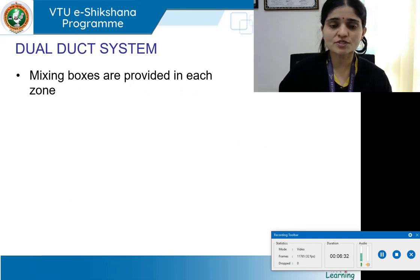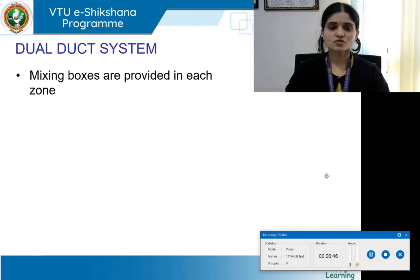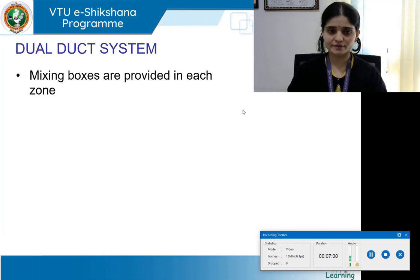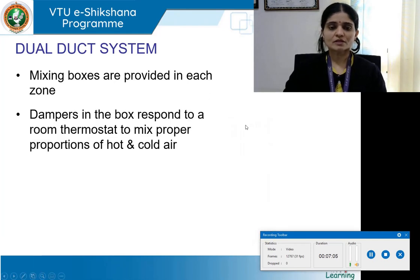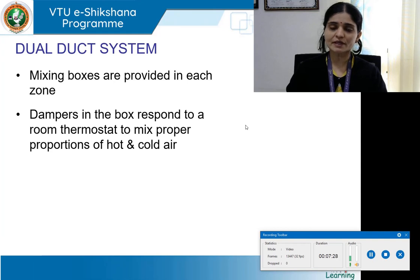The mixing boxes are strategically placed under each zone. Dampers — controlled openings or small gates — in each mixing box respond to a room thermostat to mix the proper proportions of hot and cold air. The damper controls the quantity of air and determines how much hot and cold air to mix to achieve the required thermostat parameters for that zone.